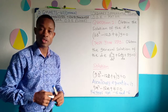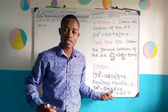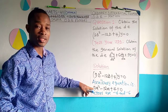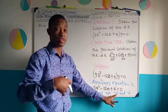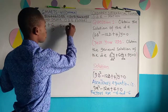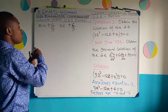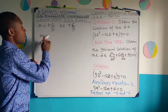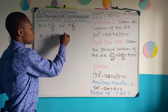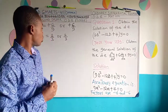We can now find the roots. Change the signs of the factors and divide by the coefficient of m². Changing -6 to +6 and dividing by 9 gives 6/9, which simplifies to 2/3. The second factor also gives +6 divided by 9 = 2/3. Notice that both roots are the same: m1 = m2 = 2/3. These are equal real roots.